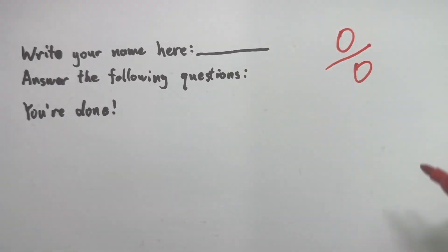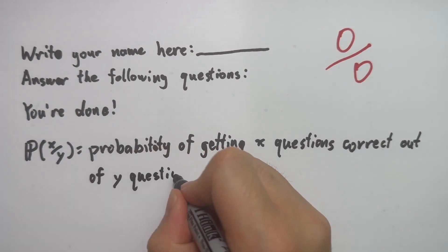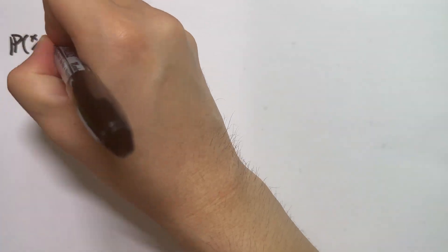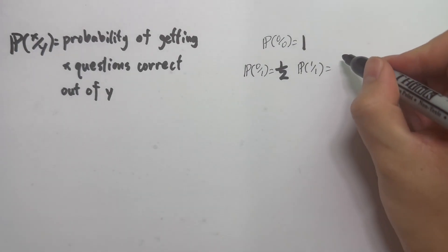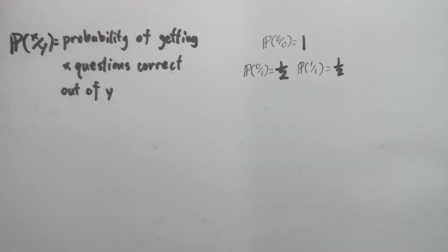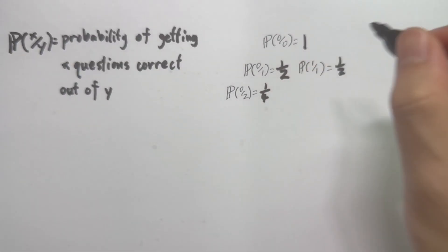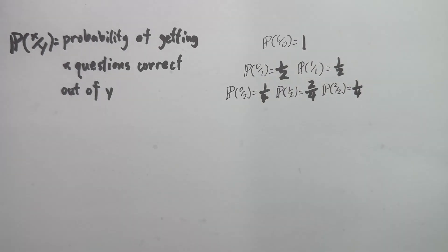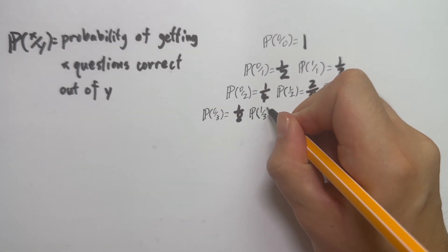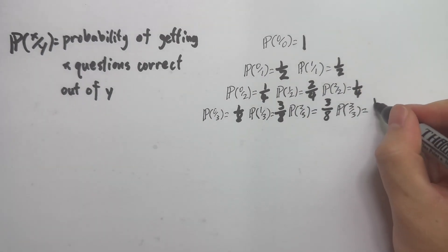If there are 0 questions, the probability of getting 0 is 1, because that's the only thing that can happen. If there is 1 question, it's 1/2 probability of getting 0 and 1/2 probability of getting 1. When there are 2 questions, the probability of getting 0 is 1/4, 1 is 2/4, and getting 2 out of 2 is 1/4. When there are 3 questions, 0 is 1/8, 1 is 3/8, 2 is 3/8, and 3 is 1/8.